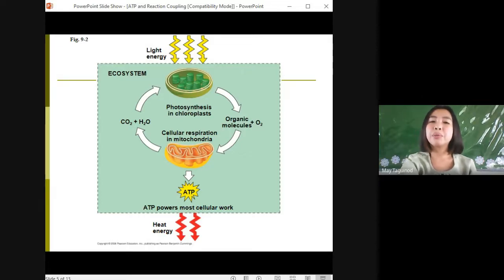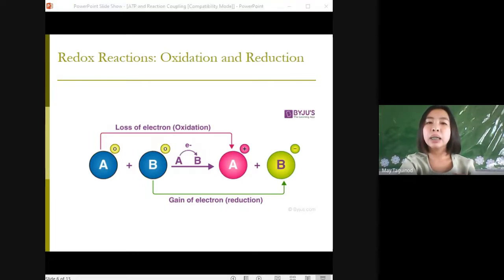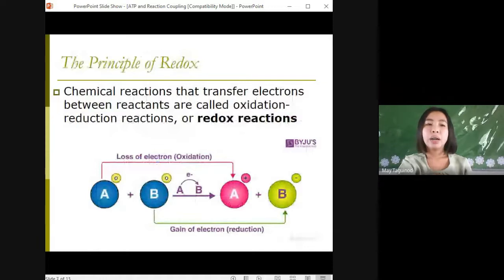On your screen is the illustration of energy flow and chemical recycling in ecosystems. But before this, let's talk about redox reactions or the oxidation and reduction. So the transfer of electrons during chemical reactions releases energy stored in organic molecules. This released energy is ultimately used to synthesize ATP or adenosine triphosphate.